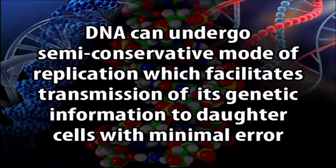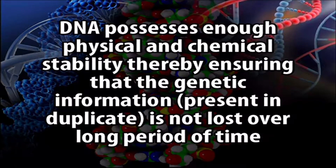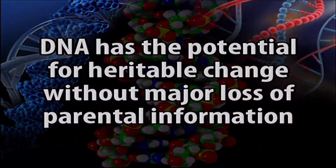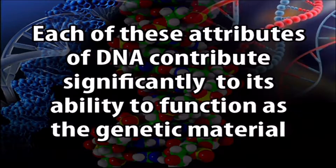DNA can undergo a special mode of replication — semi-conservative replication — which facilitates transmission of genetic information to daughter cells with minimal possible error. This involves a complex machinery of enzymes and repair mechanisms. DNA also possesses enough physical and chemical stability, ensuring that genetic information present in duplicate is not lost over a long period of time. Furthermore, DNA has the potential for heritable change without major loss of parental information, and each of these attributes contributes to its ability to function as a perfect genetic material.